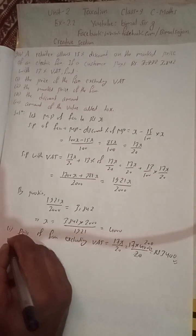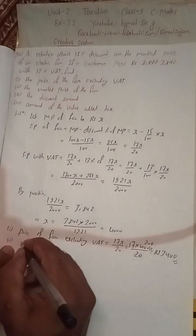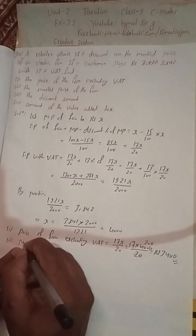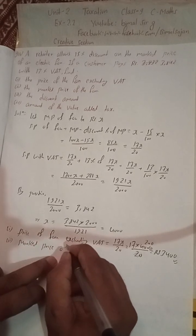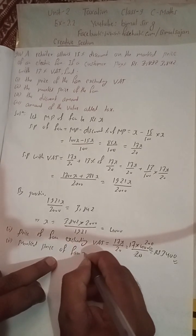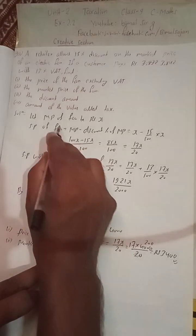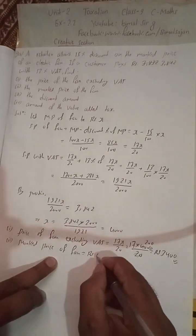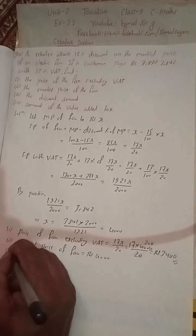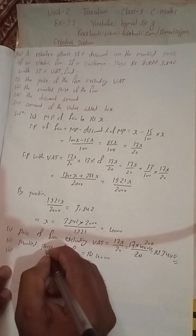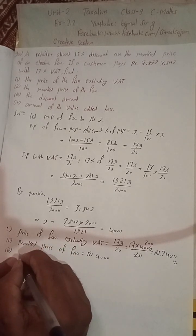Number 2 — the marked price of the fan: since we supposed the marked price to be X, and we found X = Rs 4000, the marked price of the fan is Rs 4000.